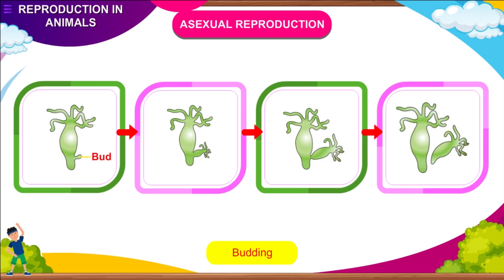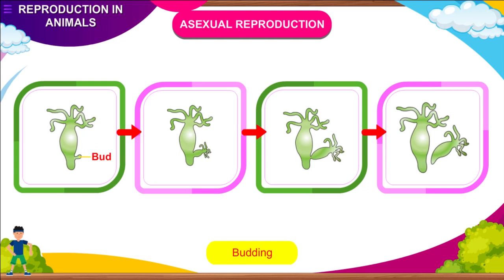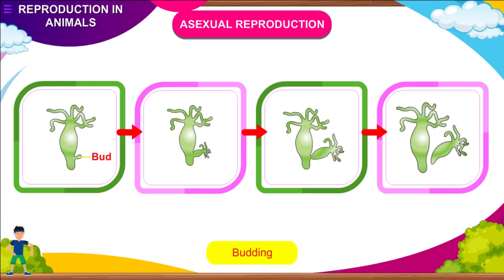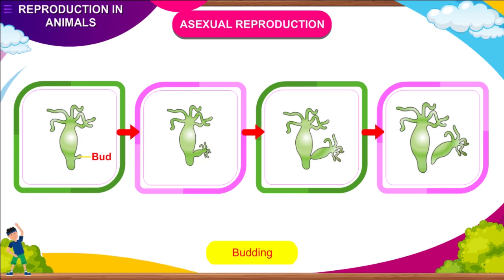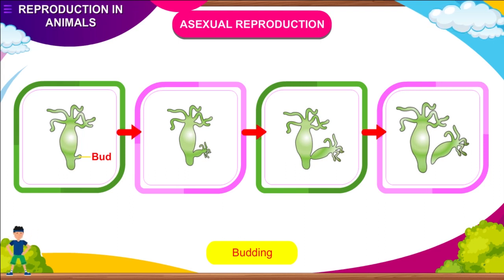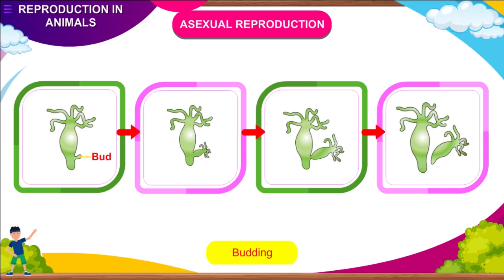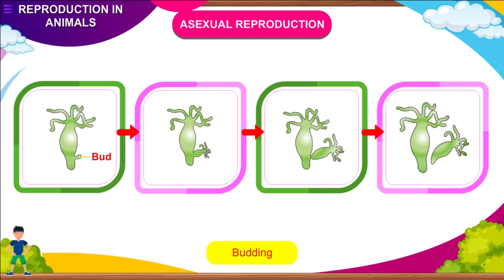Budding: In this kind of reproduction, a small outgrowth or bulb-like projection called a bud appears on the body of the organism. The nucleus of the parent body divides into two and one nucleus goes into the bud. The bud grows and finally detaches from the parent body to grow into a young individual. Since new individuals develop from a bud, like in hydra, this kind of reproduction is called budding.